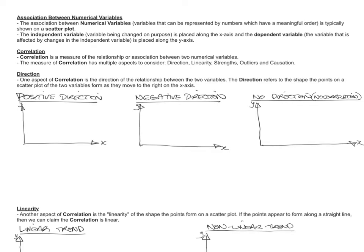Correlation is a measure of the relationship or association between two numerical variables. So it's a measure of how well two variables are associated with each other. The measure of correlation has multiple aspects to consider. There's multiple parts to this idea of correlation: the direction, linearity, strengths, outliers, and causation.